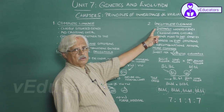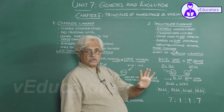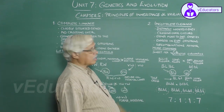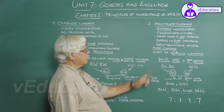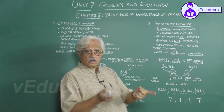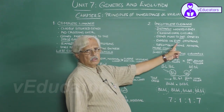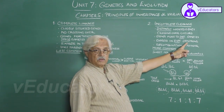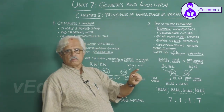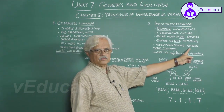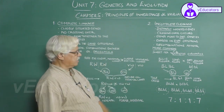This is Apoorna Linkage — incomplete linkage. Here, distantly located genes are considered; the distance between the genes is greater. Because they are distantly located, genes can move to different gametes through crossing over.